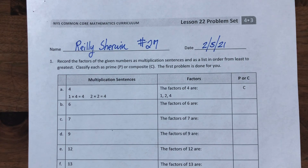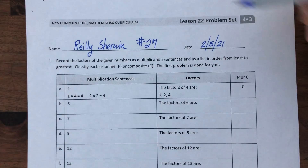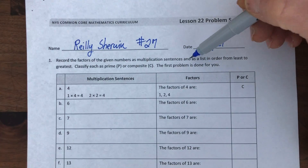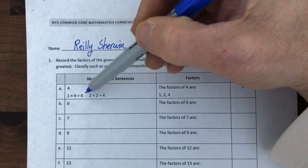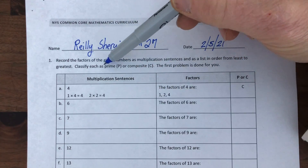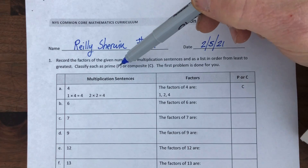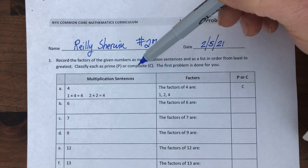Like in my classroom, I'm happy for kids to go just a step ahead of me and then check in to see how their answers are doing. We're going to start with your name and date at the top. The directions say: record the factors of the given numbers as multiplication sentences and list in order from least to greatest. Classify each as prime or composite. Prime numbers have only two factors — one and itself — and composite numbers have more than just that.